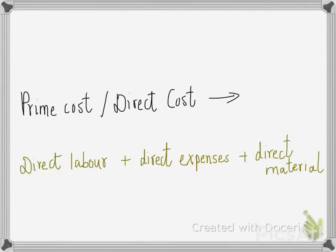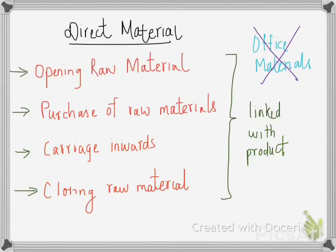Direct material includes things such as opening raw material, purchase of raw materials, carriage inwards, and closing raw material. Direct material means the materials which are directly linked with the product. Raw materials — opening raw material and closing raw material — are the things which make up the product, so they are directly linked with it, which is why they come under direct material.